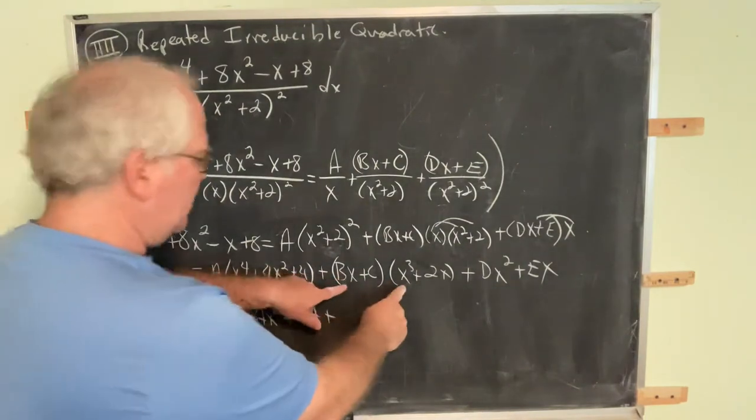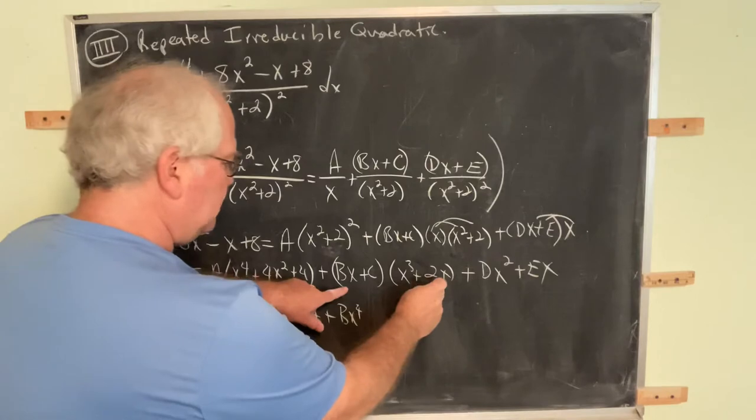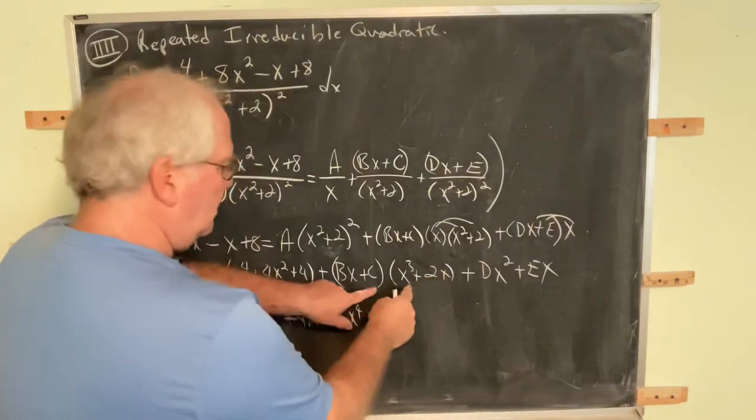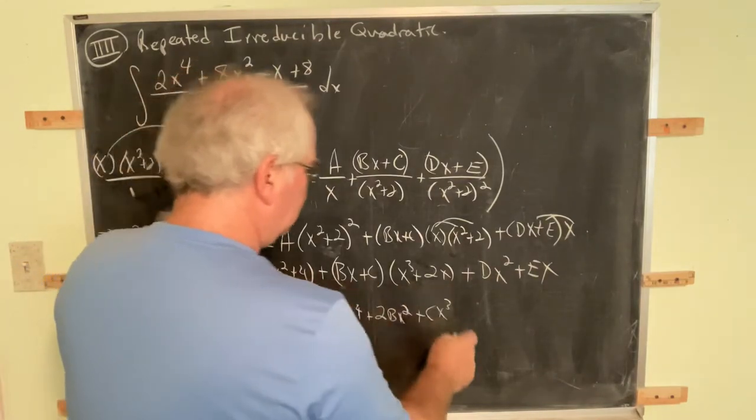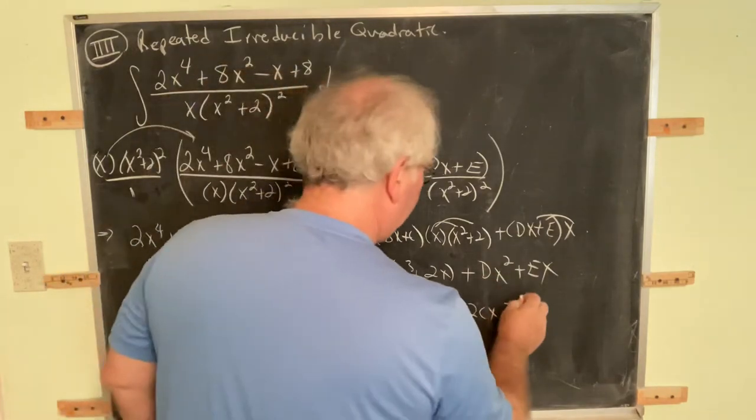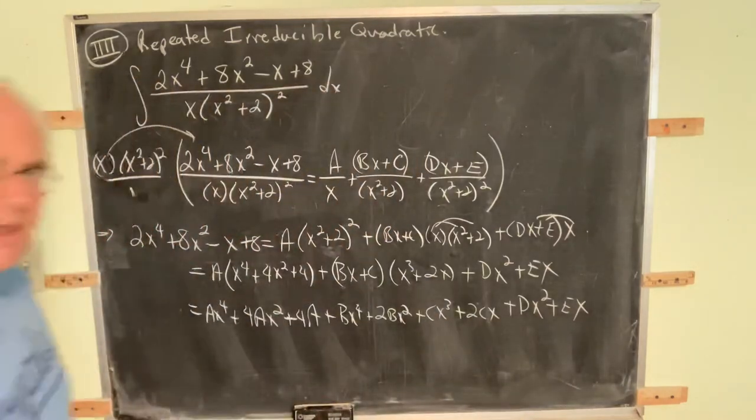Okay, so now we need to distribute and foil. Ax to the fourth plus 4Ax squared plus 4A. Foil. This is Bx to the fourth. Outside is 2Bx squared. Inside is plus Cx cubed. And then last is plus 2Cx. And then this is already multiplied out. Woo! That'll be enough for anybody.